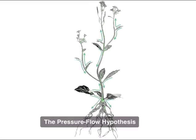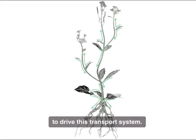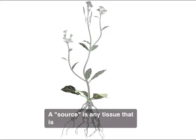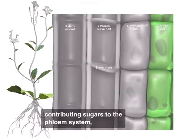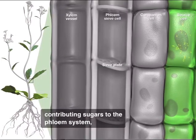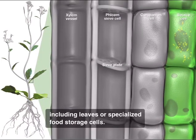The pressure flow hypothesis explains how plants use osmosis to drive this transport system. A source is any tissue that is contributing sugars to the phloem system, including leaves or specialized food storage cells.